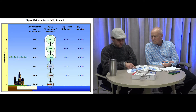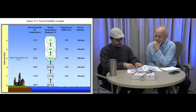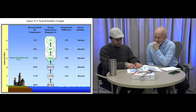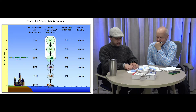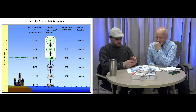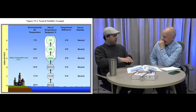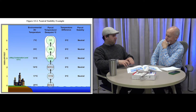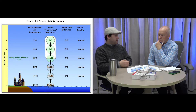Figure 12-3 shows absolute instability. Starting at 20°C at the surface, lifting 1,000 feet brings the parcel to 17°C but the ambient air is now only 16°C — so the lifted index is −1 and the parcel wants to keep rising. At 2,000 feet, the parcel is at 14°C but the ambient is 12°C. The lifted air just keeps being warmer than the air around it, so it keeps going up like a hot air balloon.